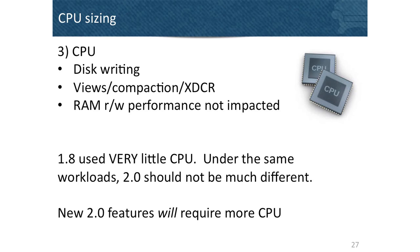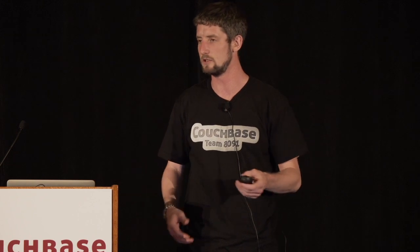CPU was not a concern in 1.8 — you could have 99-100% CPU and not see a difference in performance when serving data from RAM. With 2.0, that's still true for RAM-served data, but now you need CPU for indexing, cross-data-center replication, and compaction. We're not talking about 64-way servers — more like an 8-core instead of a 4-core, or a 4-core instead of a 1-core. Scaling out allows all nodes to process their own individual data set and workload.